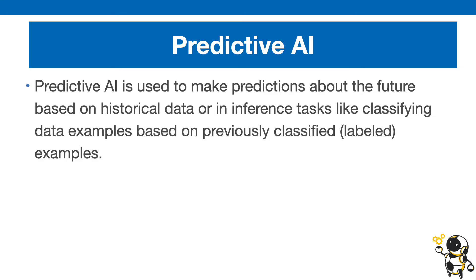For example, if you're a project manager, you can feed it all of the past performance data of your project — when tasks started, when they finished, what those tasks are — and then the algorithm is going to make a prediction of how long certain tasks in the future will take.